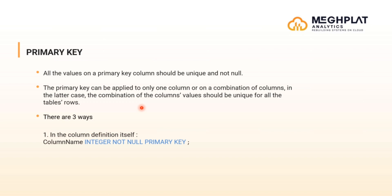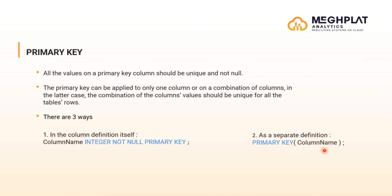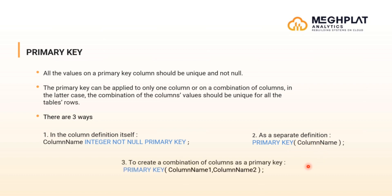There are three ways to define a primary key. The first one is in the column definition itself — we can declare the column name as integer not null primary key. The second type is as a separate definition: primary key with the column name inside braces. The third one is to create a combination of columns as a primary key — we give primary key followed by the column names inside braces.